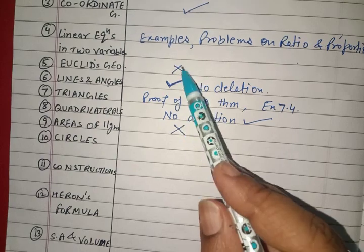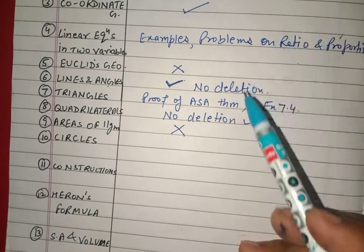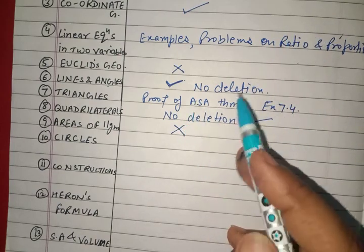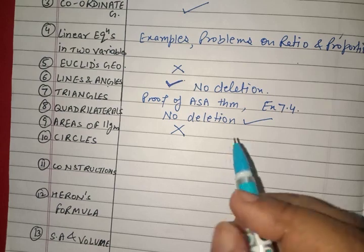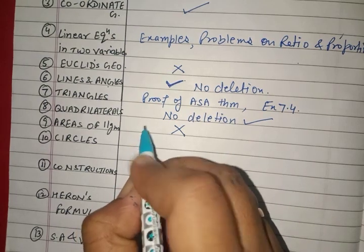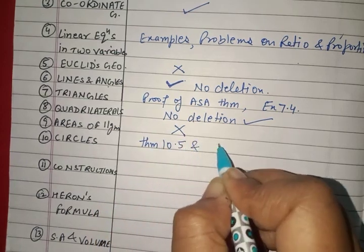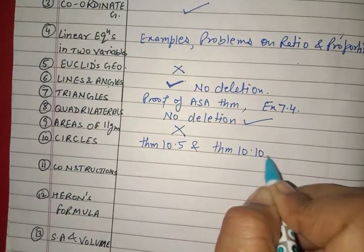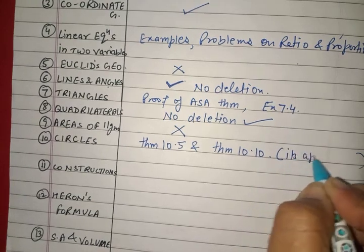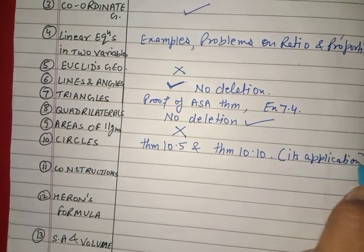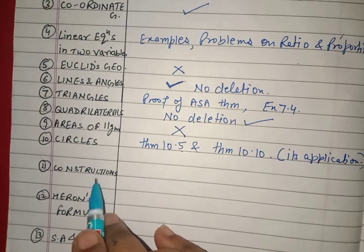So out of geometry, Euclid's Geometry and Chapter 9 are completely removed from the syllabus for 2020-21, just because of COVID. The next chapter is Circles. In Circles, there are two theorems — Theorem 10.5 and Theorem 10.10 — which you can find in your book, and no need to do these theorems and their applications. They are not in the syllabus.